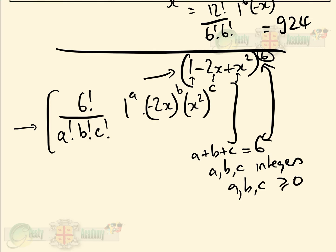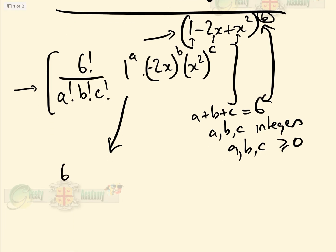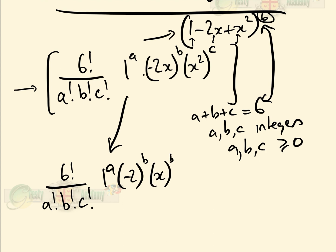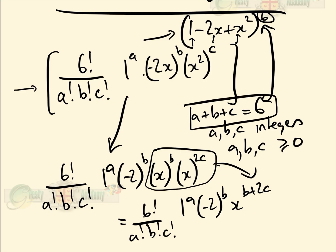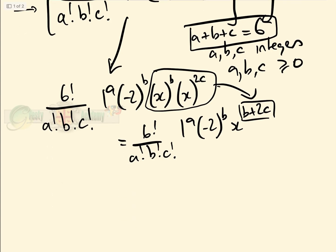That general term simplifies to 6 factorial over a factorial b factorial c factorial, times 1 to the a, times (minus 2) to the b, times x to the b, times x to the 2c. This simplifies further to 6 factorial over a factorial b factorial c factorial times 1 to the a times (minus 2) to the b times x to the (b plus 2c). We end up getting all the x's at the end. Since we're looking for the coefficient of x to the 6, we know that b plus 2c must equal 6.